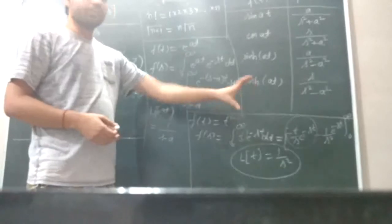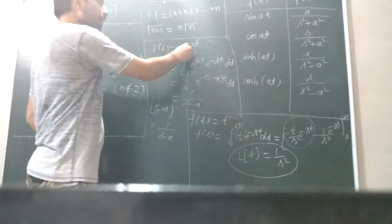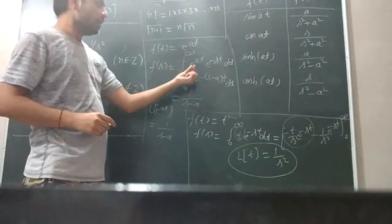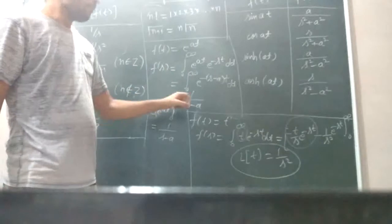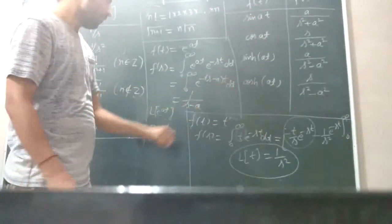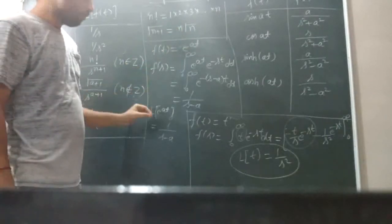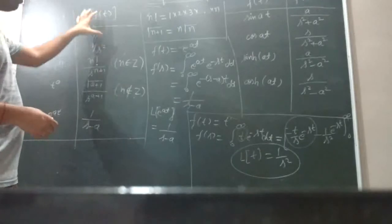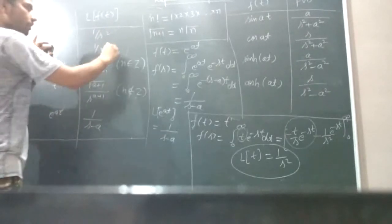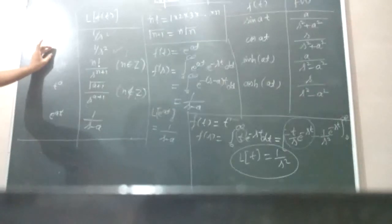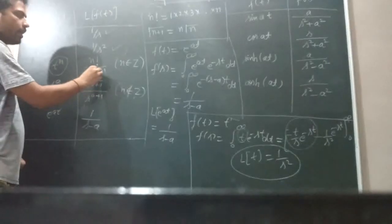We can also find the Laplace transform of e to the power at. We write F(s) equals the integral from 0 to infinity of e to the power at times e to the power minus st dt. Combining exponents, this becomes the integral of e to the power minus (s minus a)t dt, from 0 to infinity. Solving and simplifying gives 1 by (s minus a). So the Laplace transform of e to the power at is 1/(s minus a). Generalizing further, the Laplace transform of t to the power n is n factorial upon s to the power (n plus 1).